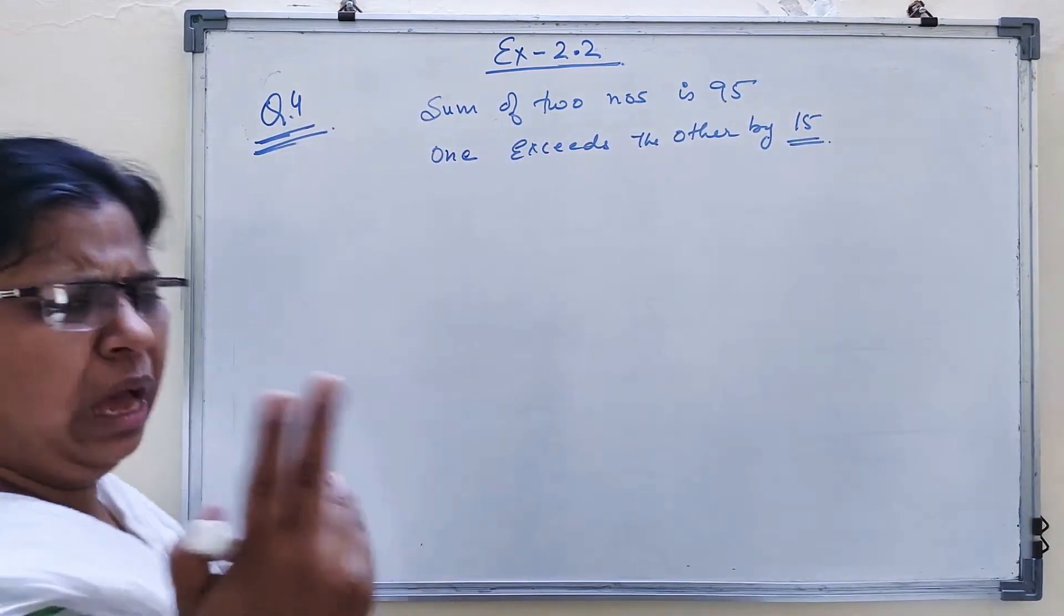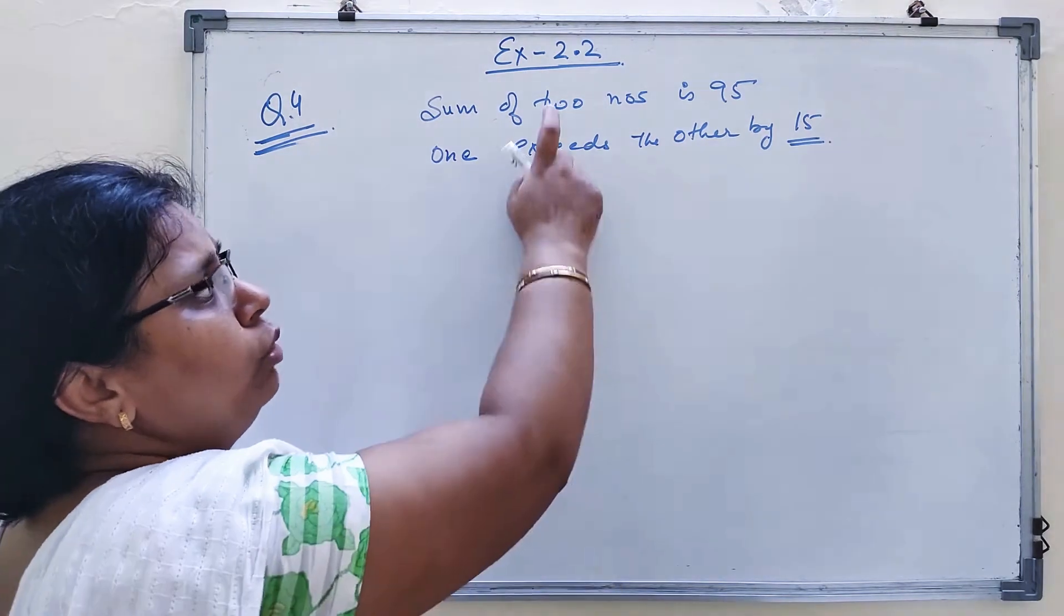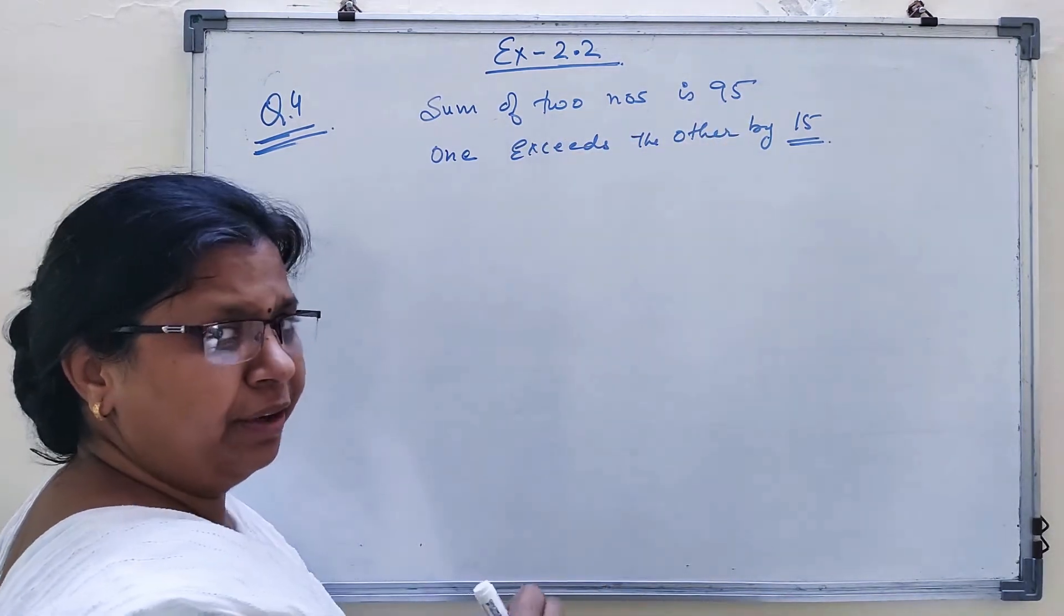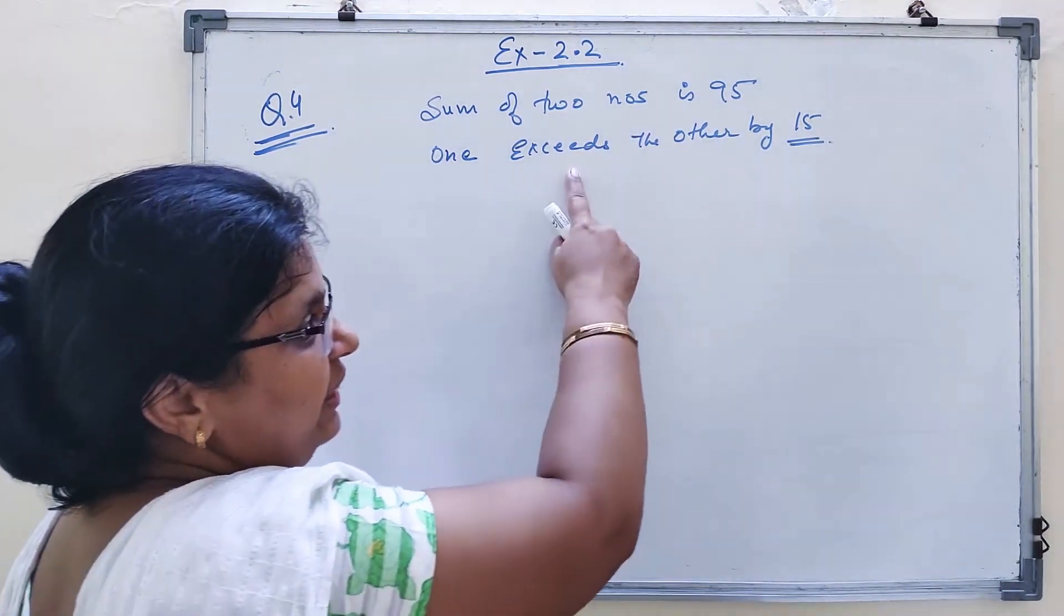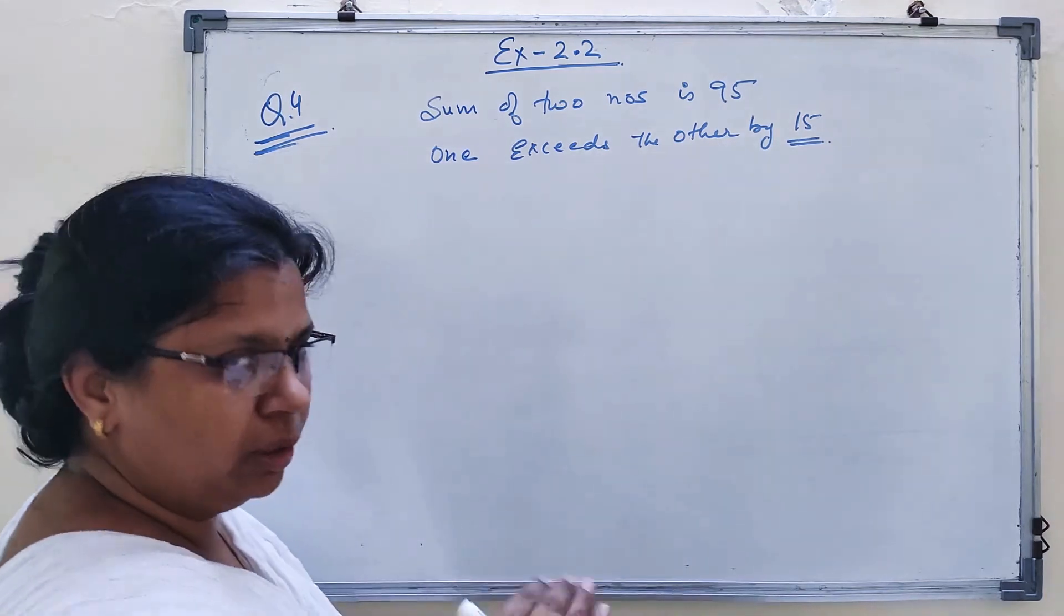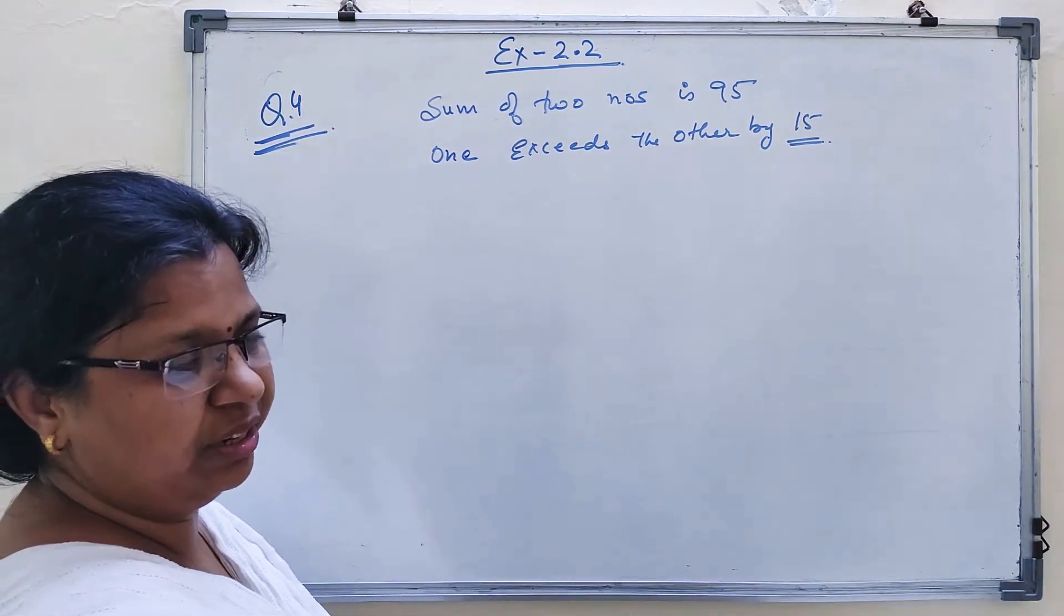The question is you have two numbers. The sum of those two numbers is 95. One exceeds the other by 15, meaning one number is 15 more than the other number.